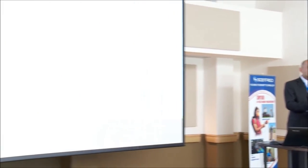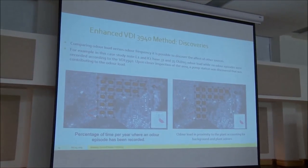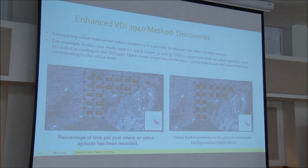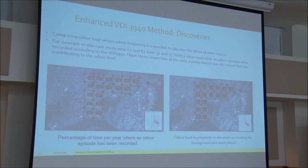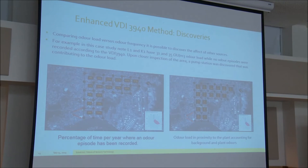Another thing we can do is compare two different types of graphs. For example, we look at the VDI results and we look at the odor load. In the bottom left corner, the odor hours are very low — the observers went there and didn't detect the plant odor. But when we look at the odor load, it's a lot — more than any other square. When we investigated, there was a pump station there that was contributing to this odor load. So we can identify sources not identified at the beginning. It's the pump station adding to the load, but not associated with our refinery.